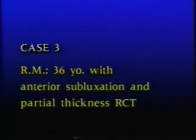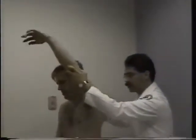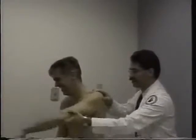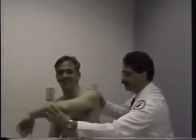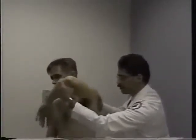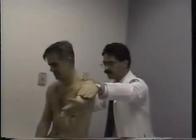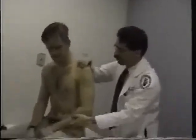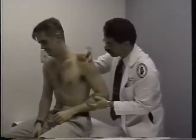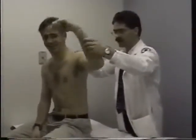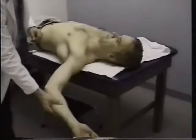Case 3, RM, is a 36-year-old with anterior subluxation and a partial thickness rotator cuff tear, presenting a mixed picture of instability and impingement. He has a markedly positive Neer sign, a positive Hawkins impingement sign, pain with cross-chest adduction, pain with the supraspinatus resistance test, mild tenderness over the supraspinatus, a markedly positive apprehension test of Neer, and a positive apprehension relocation sign.